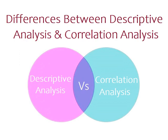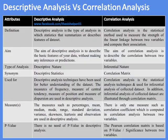Differences between descriptive analysis and correlation analysis: Descriptive analysis is the type of analysis in which statistics summarizes or describes features of a data set. Correlation analysis is the statistical method used to measure the strength of the linear linkage between two variables and compute their association. The aim of descriptive analysis is to describe the basic features of your data without making any inferences or predictions.